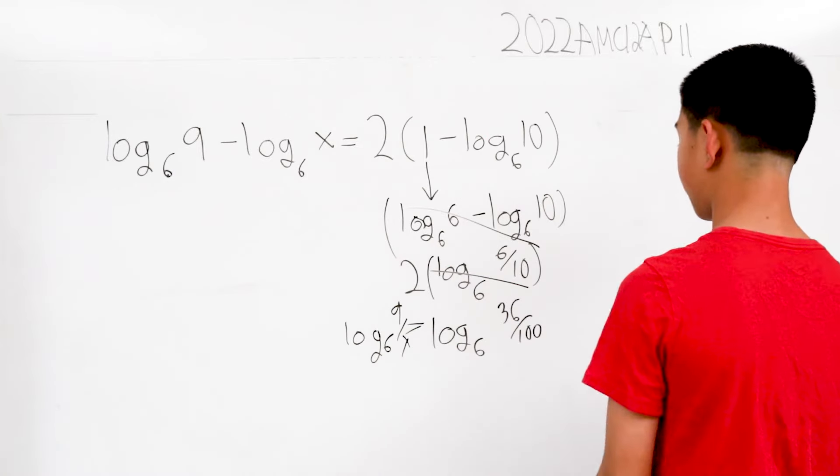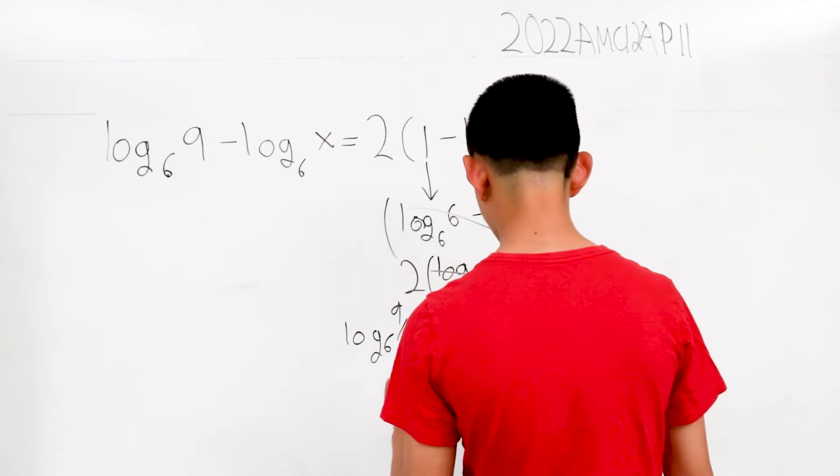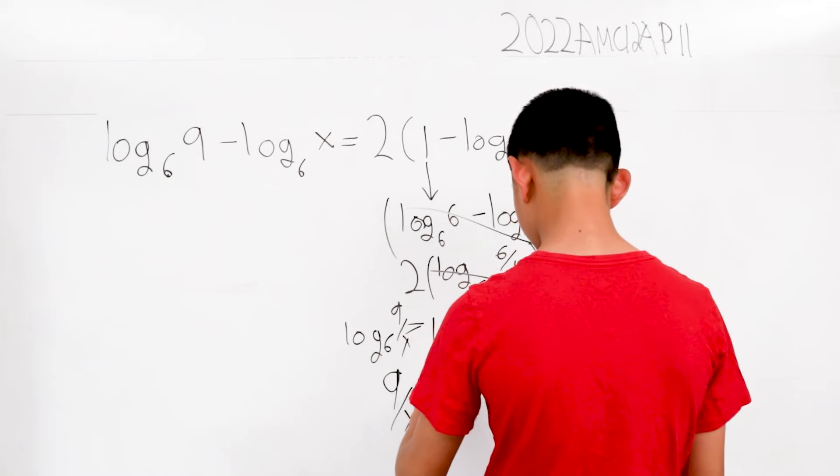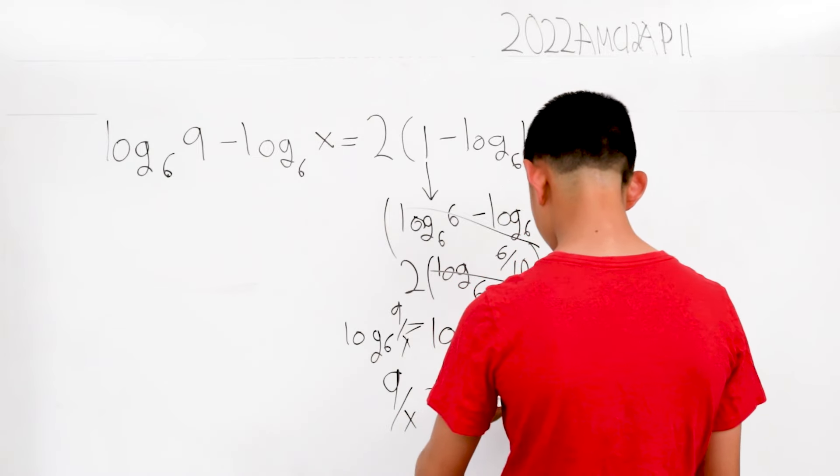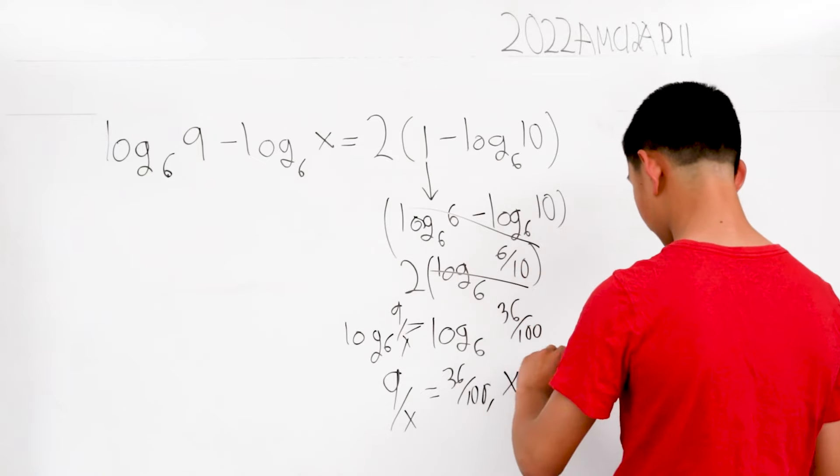If we have log base 6 on both sides, in this scenario 9 over x equals 36 over 100. Solving for x, we get that x is 25 in this scenario.